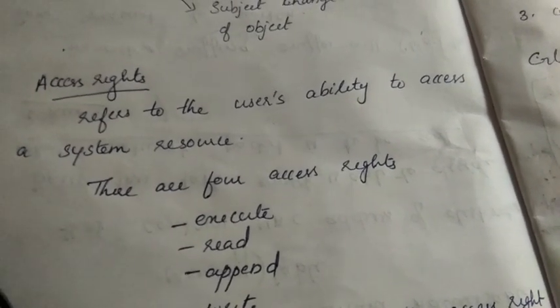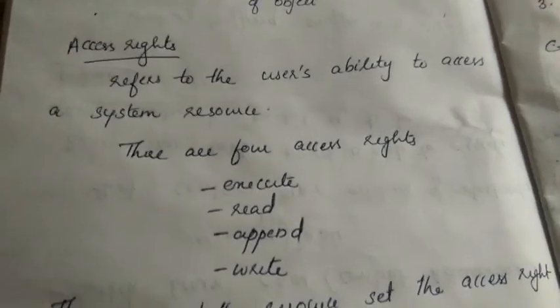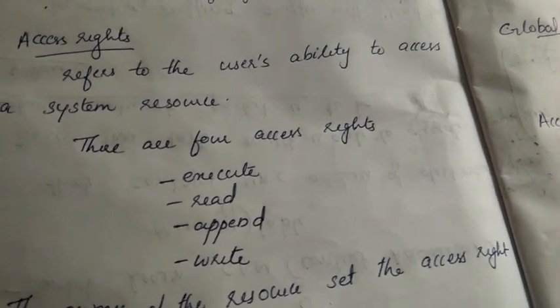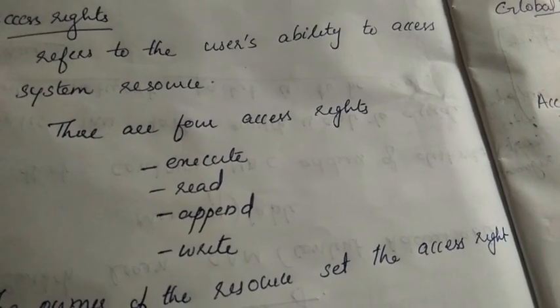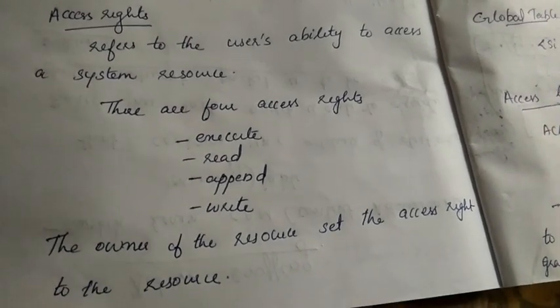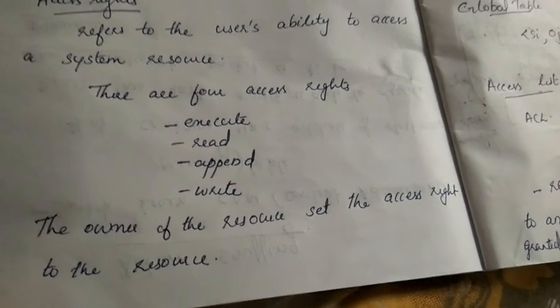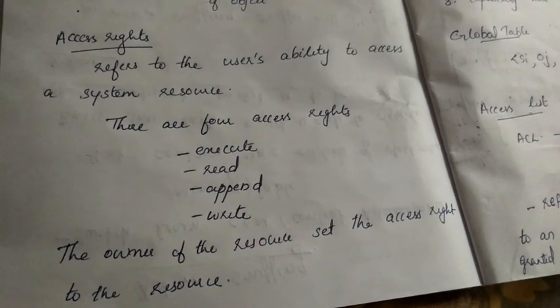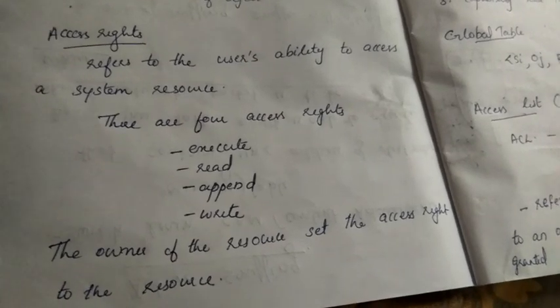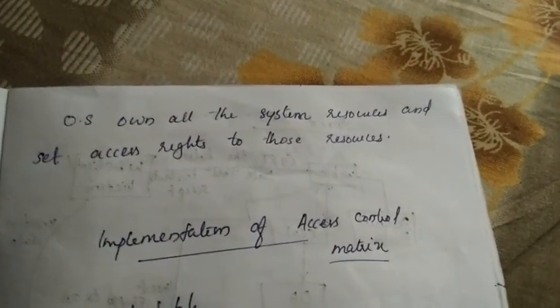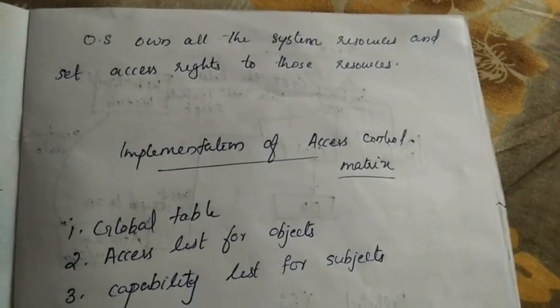Access right refers to the user's ability to access a system resource. The owner of the resource sets the access rights. The operating system owns all system resources and sets access rights to those resources.